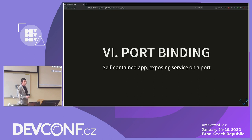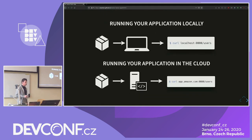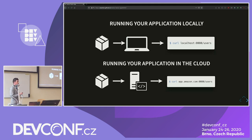Port binding: this factor states that our application should be self-contained. A lot of legacy applications depend on being deployed on a web or application server, where the web server handles networking requests and routes them to the application. The 12-factor app does not need that. Instead, it has the web server injected as a dependency, and by just running the executable package, we get a working web service exposed on a configured port. When running locally you query it on localhost; when deployed in the cloud, you have a working web service on the host and port you have configured — typically exposed through a gateway or load balancer.